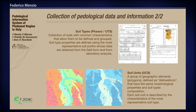The two main types of data and information are soil types, also called phases — a collection of soils with common characteristics that allow them to be defined and grouped. Soil type properties are defined using the most representative soil profile, whose data are obtained from field forms and laboratory analysis. The information derived from soil types is contained in the soil units. Soil units are groups of geographic elements — polygons or features defined as delineations — that have the same morphological properties and soil type composition. Each soil unit is described by the characteristics of its most representative soil type.